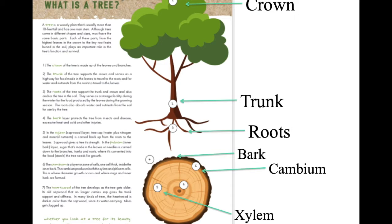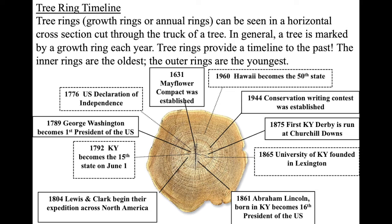The center-most part of the tree is called the heartwood. This is where the xylem has thickened up so much that it doesn't transport anything anymore, but instead acts as a support system.